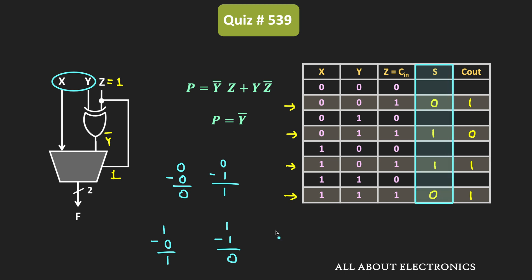To perform subtraction using the two's complement of a number, whenever there is a carry we neglect it. Whenever the carry is 0, it indicates that the output is negative — for example in the case of 0−1, although we get 1 as the output, it indicates the output is negative. So in this way, the circuit is performing subtraction. Even without knowing the concept of two's complement addition and subtraction, from the truth table we can confirm that the given circuit performs subtraction.